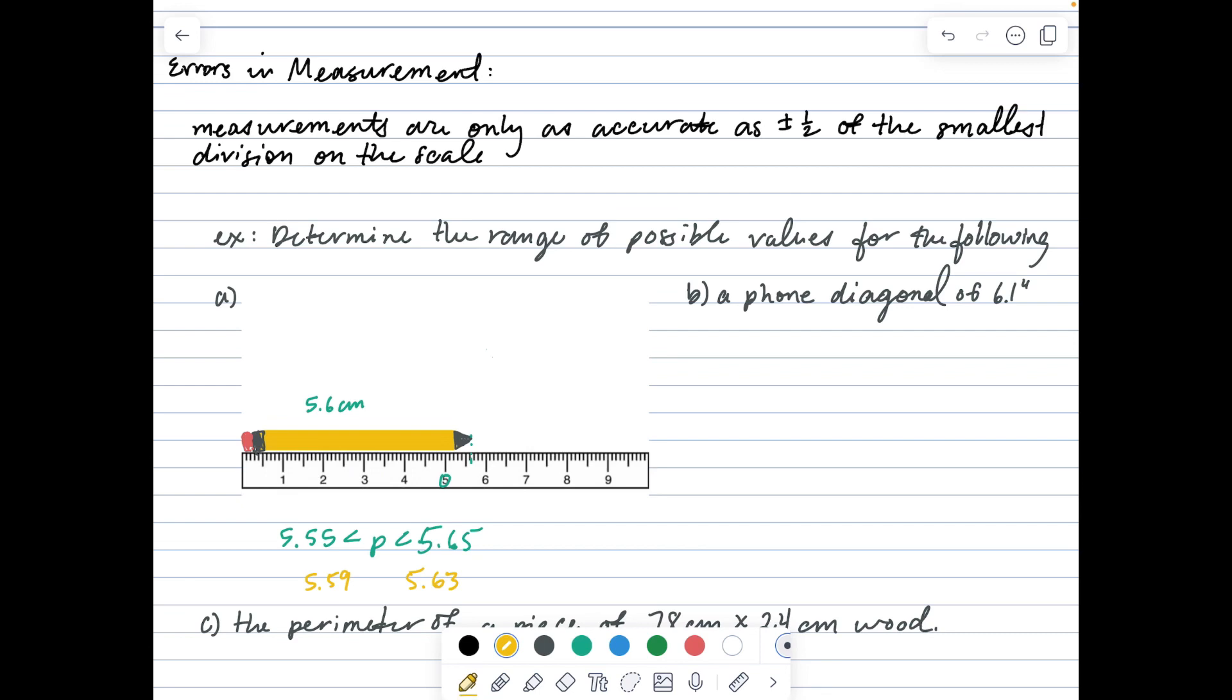A phone diagonal of 6.1 inches means the range of possible values would be 6.05 inches less than the diagonal less than 6.15 inches. Anything in that range would round to 6.1 inches. We take half of the smallest division, 0.05 in this case, and add it and subtract it to get our minimum and maximum values.